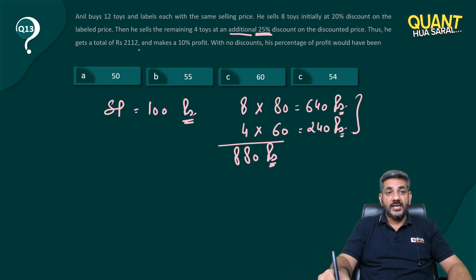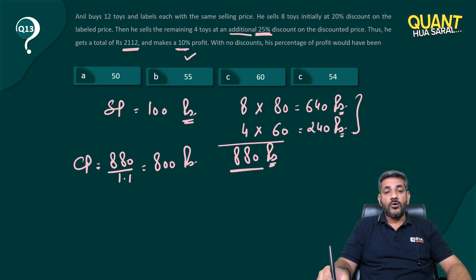The question says he gained a total of Rs. 2112 and makes a 10% profit. Now, if the articles are sold for Rs. 880 and there is a 10% profit, what is the cost price? After 10% profit I have 880, so 880 divided by 1.1 equals Rs. 800, which is the cost price for all 12 toys.